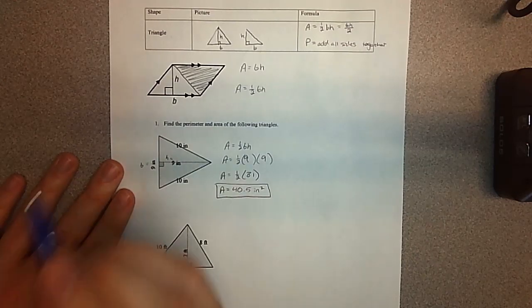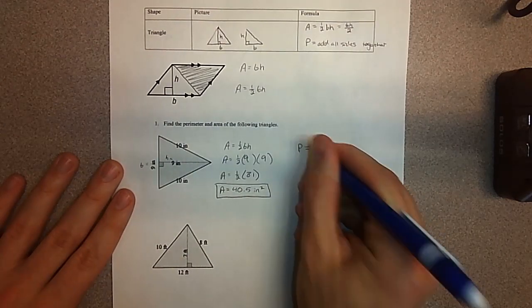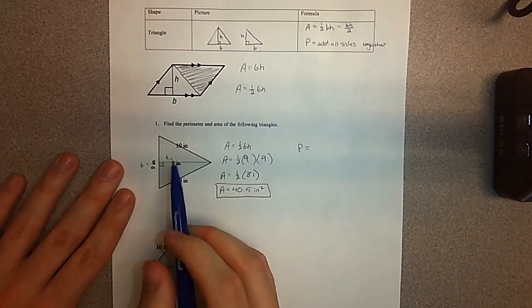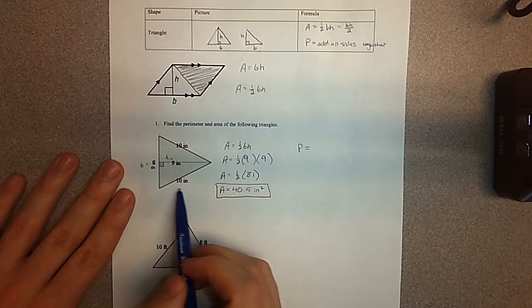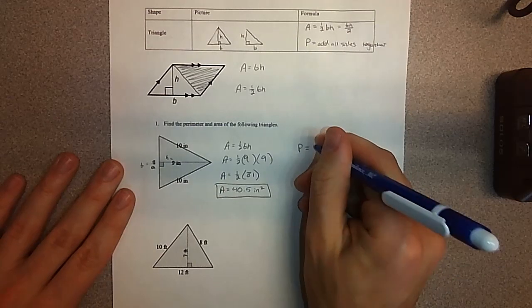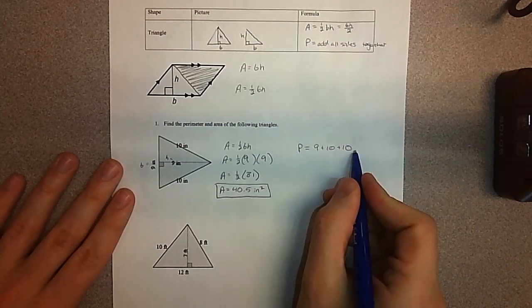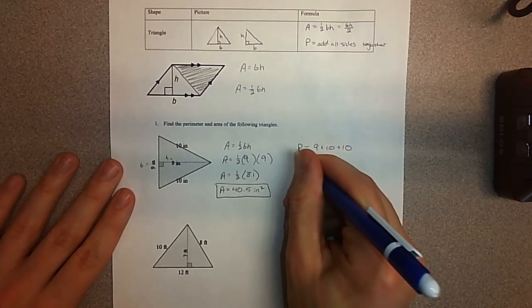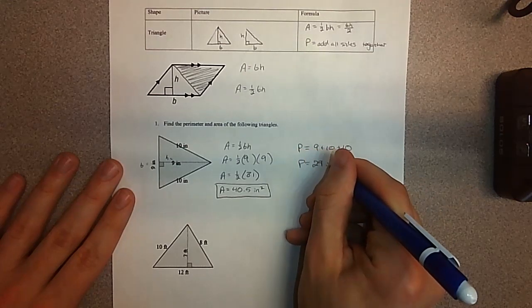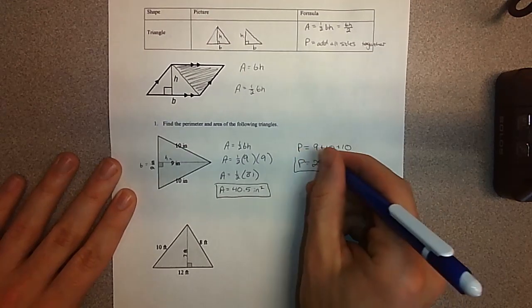For my perimeter, I'm adding all three sides together. They gave us all three sides: 9, 10, and 10, which will be the distance around my shape. Nine plus ten plus ten, I'm getting 29 inches. This one is just the first dimension units, just measuring a distance.